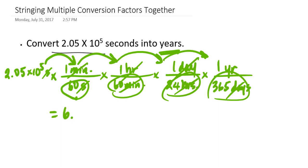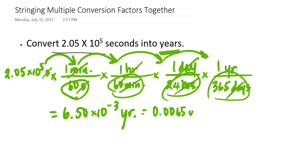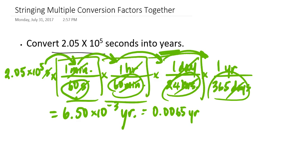If you do this properly, you should get 6.50 times 10 to the negative third of a year — or expressed as a decimal, 0.0065 of a year. This is an example of how we set up multiple conversion factors, multiple ratios between units that express the same quantity.